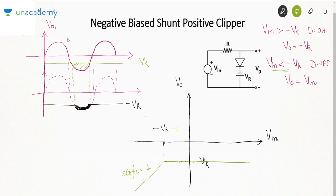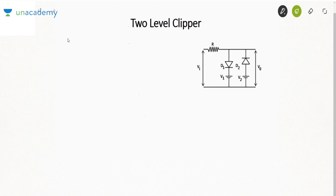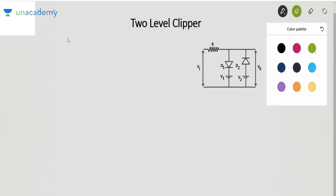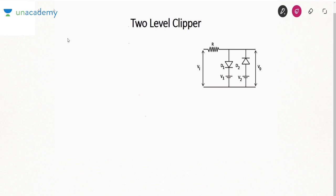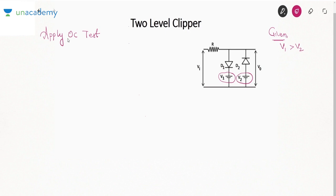Now having learned all clipper types, let's analyze a more complicated circuit: the two-level clipper. In a two-level clipper there are two reference voltages V1 and V2, and it is given that V1 is greater than V2. We apply the open circuit test — not the short circuit test — because if both diodes are shorted, V1 and V2 would be in parallel, which violates KVL since two different voltage sources cannot be in parallel.